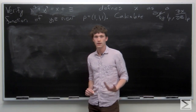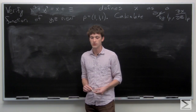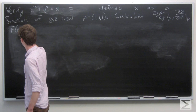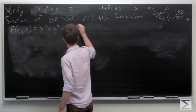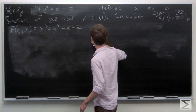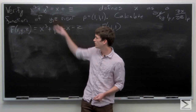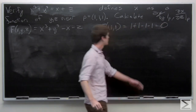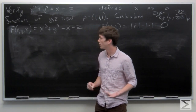We know that anywhere the partial derivative of f with respect to x is non-zero, we can implicitly define x as a function of y and z. So first, let's define our function f, and let's double check that our point p is actually on the level curve given. We get f of p is equal to 0, and since we just brought these terms over, our level curve is at 0. So our point is on our surface.